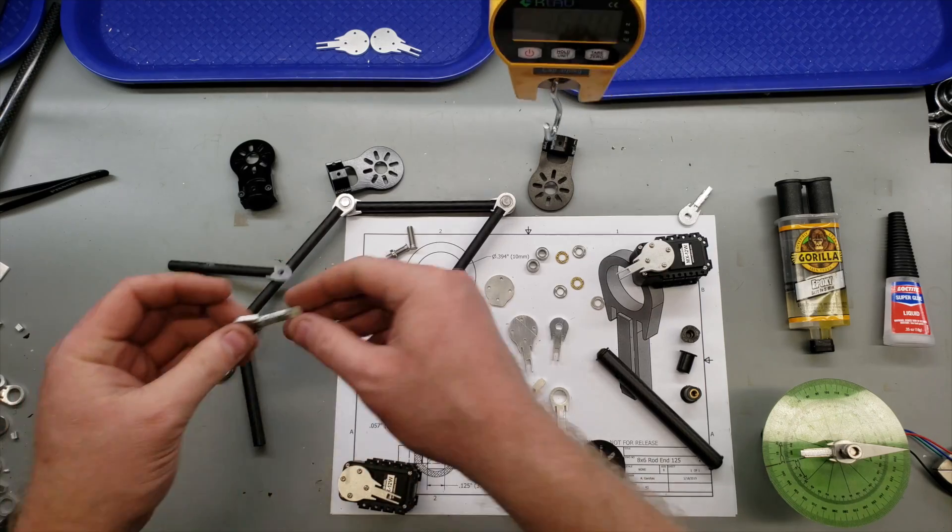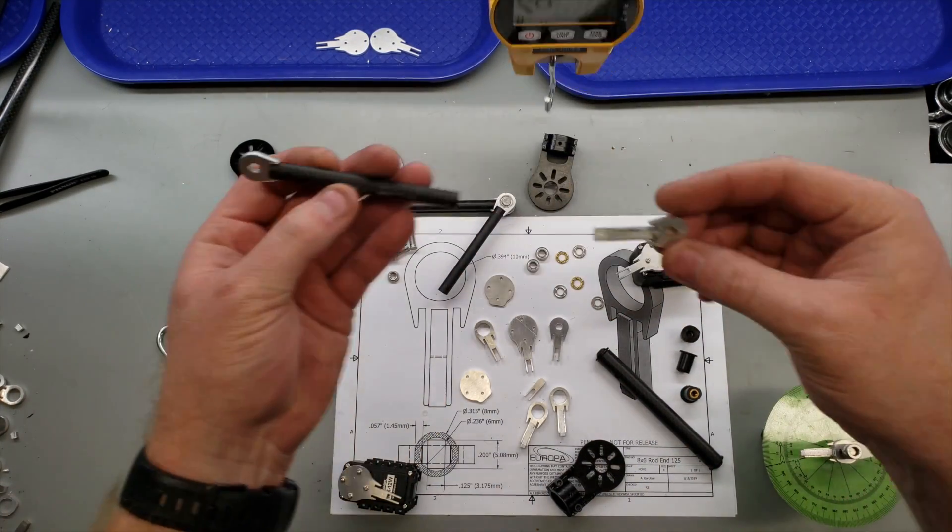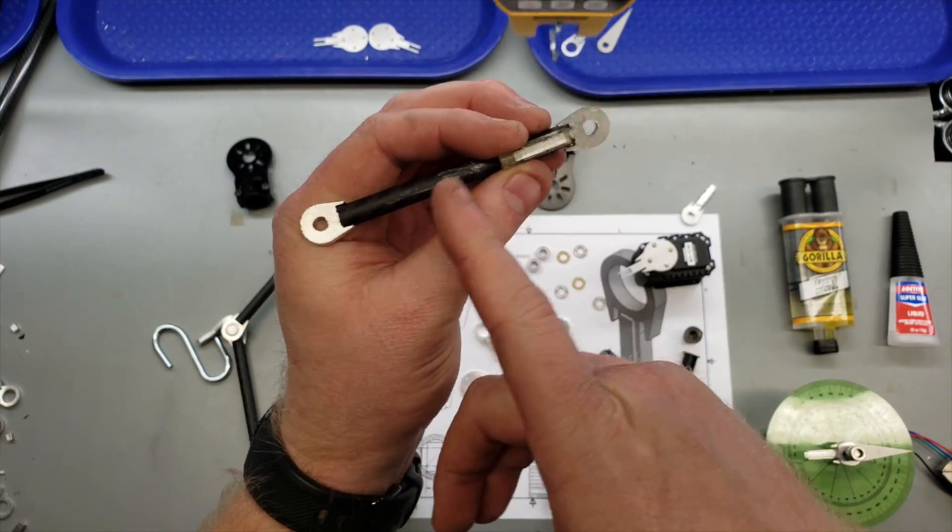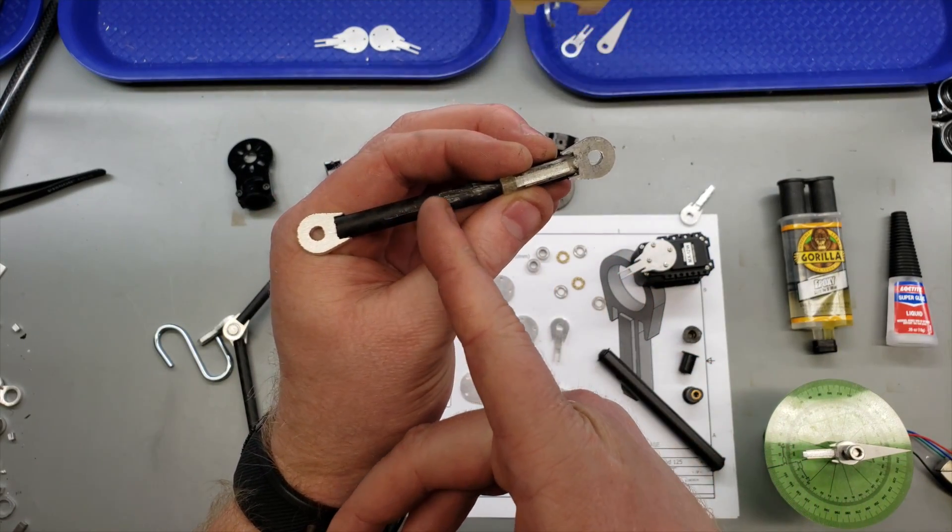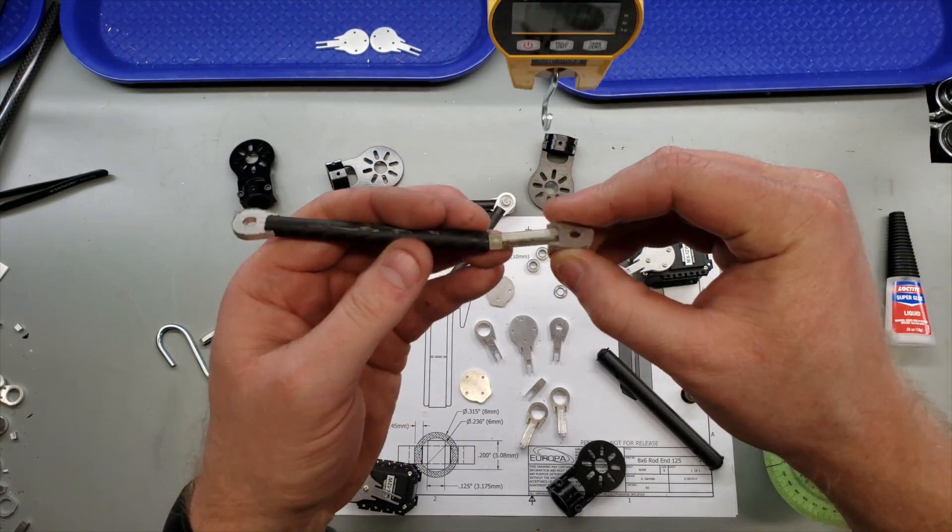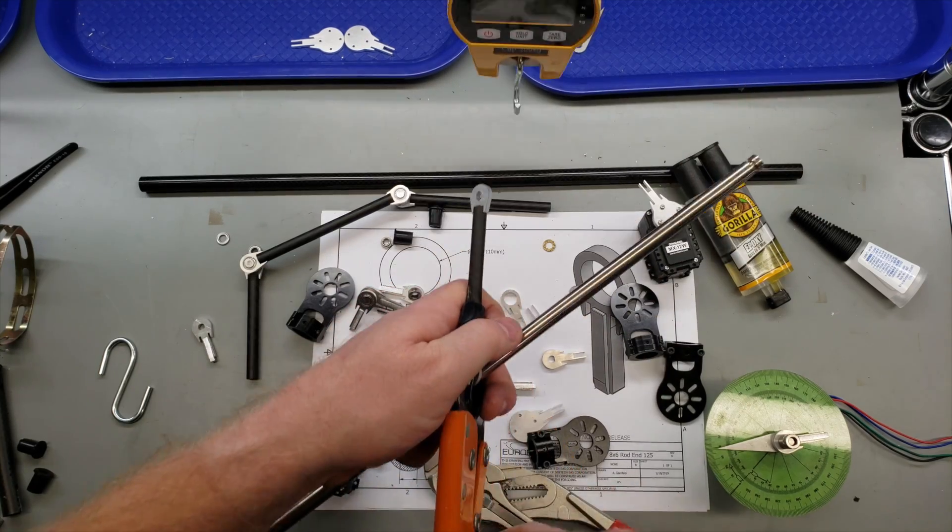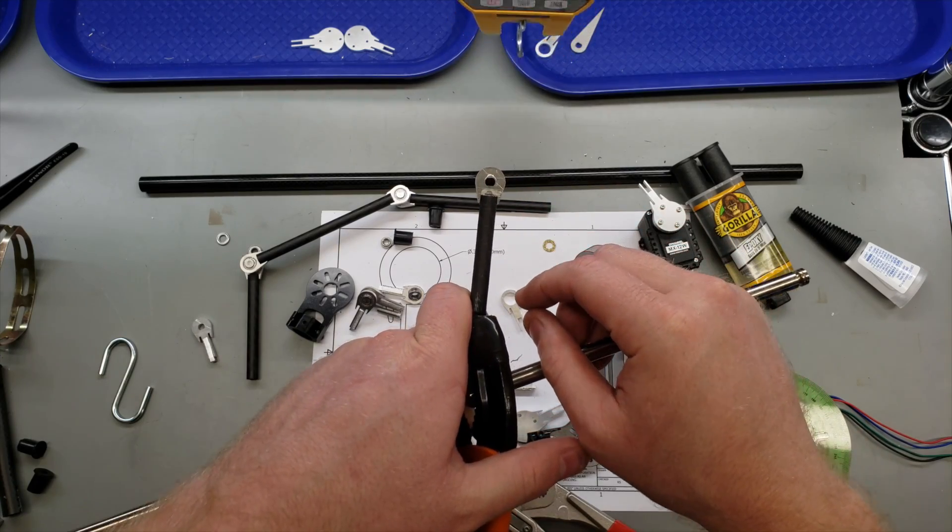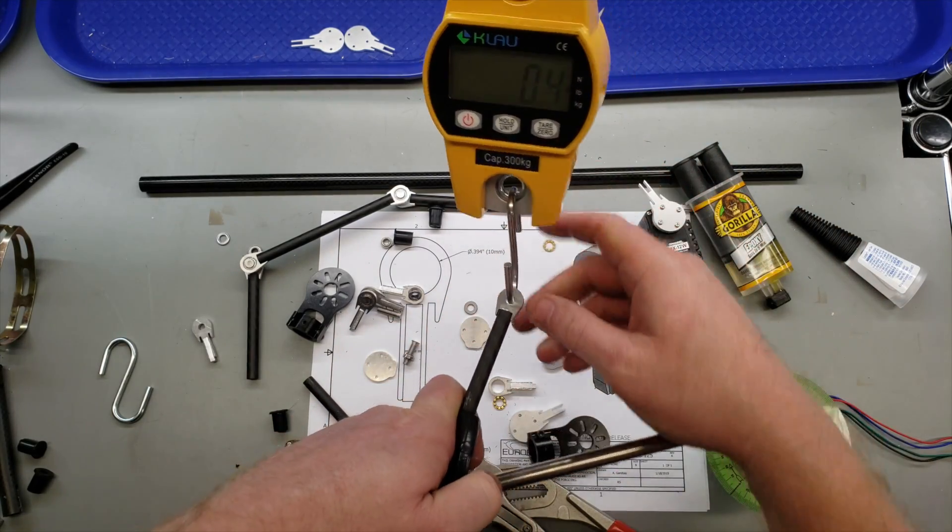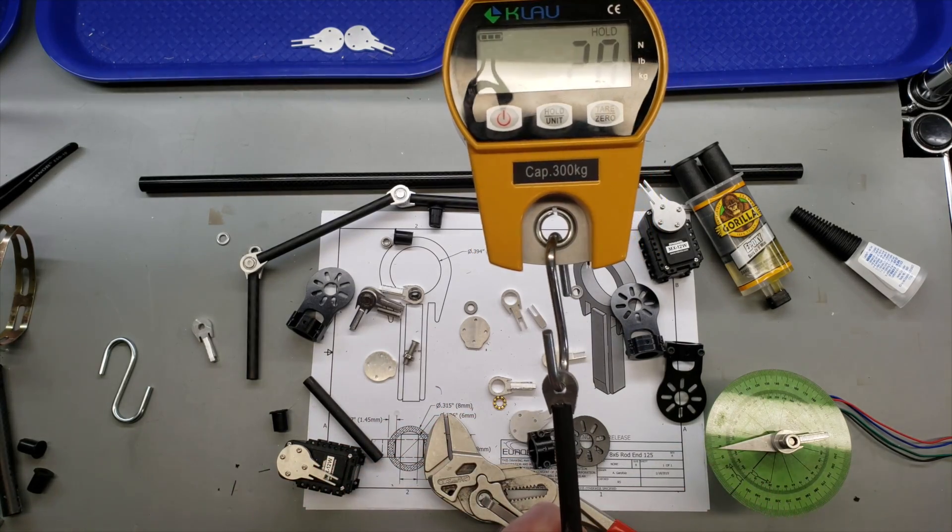So the epoxy seemed to give out before the superglue did, which is a little surprising. What's cool about these is if you weren't trying to reduce the weight as much as possible, you could just extend this out. You could make it a much longer insert. Okay. So I didn't really want to leave the superglue variant without an actual pullout number. So let's try to see if we can actually get a pullout on it.